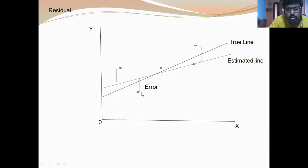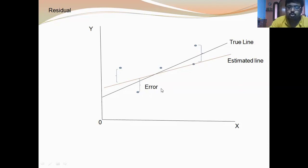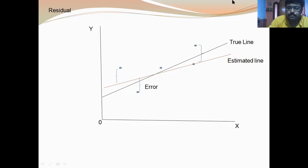Here also, the point on the estimated line and the point off the estimated line gives us the residual. So this is the clear concept distinguishing the error and the residual.